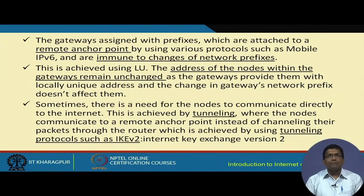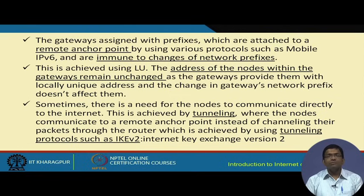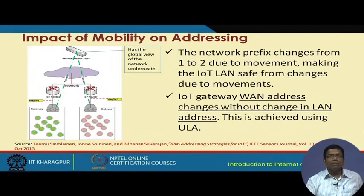Within a particular LAN the address of the nodes remains unchanged because they are within the gateway with a local unique address, and a change in the gateway's network prefix doesn't affect them. However, it might be required for nodes to communicate directly to the internet as well. This can be done with the concept of tunneling, where nodes can communicate to a remote anchor point instead of channeling packets through the router, using a tunneling protocol such as IKEv2. Tunnels can be set up directly from the gateway to the anchor point.